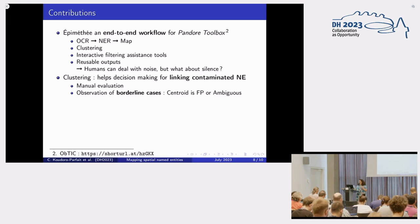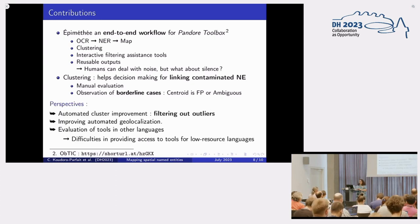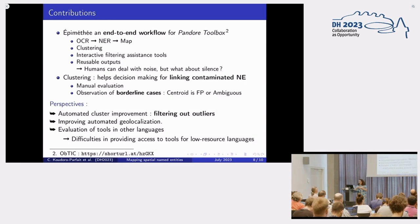I can show a small part of the manual evaluation we did on the clustering and the observation of borderline cases. Our perspectives are to improve the automation of clustering, improve geolocalization, and evaluate the tool for other languages — particularly low-resource languages like Portuguese. Thank you for your attention.